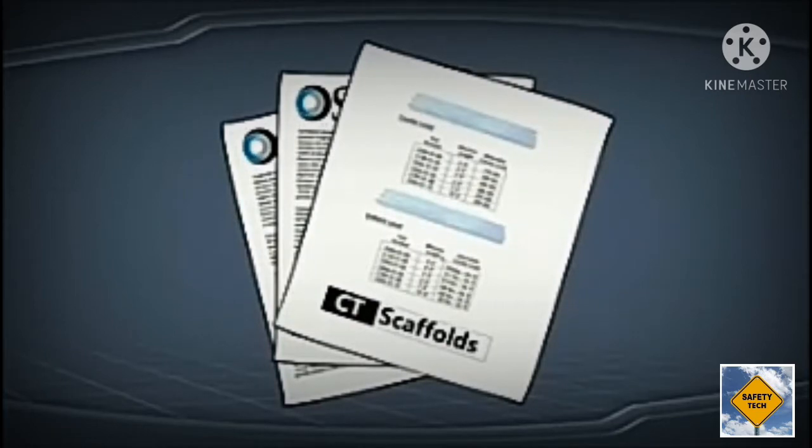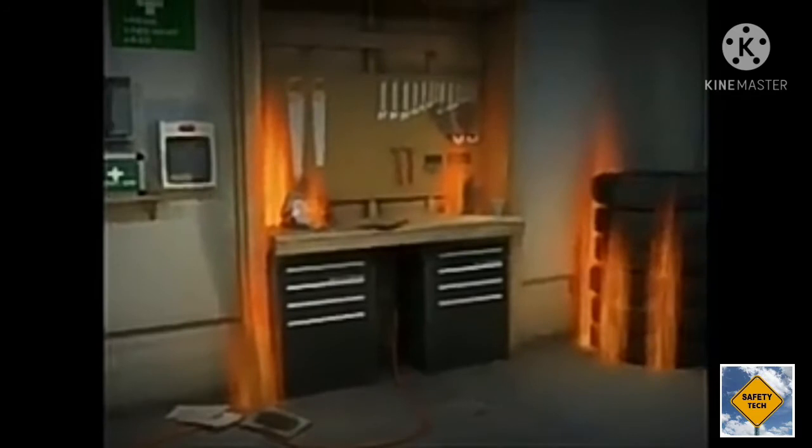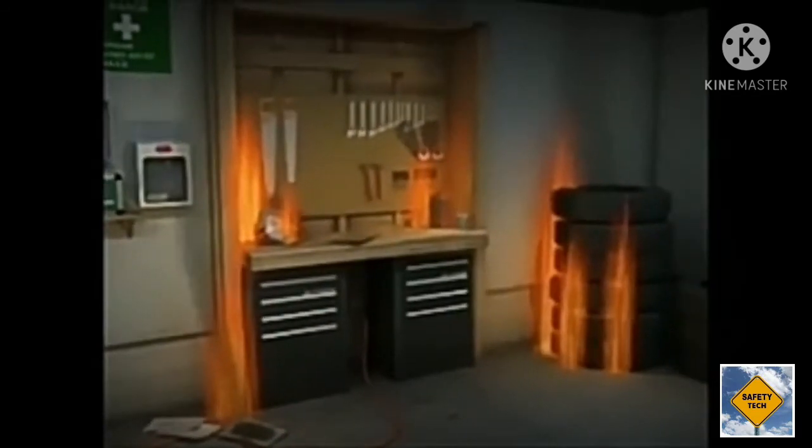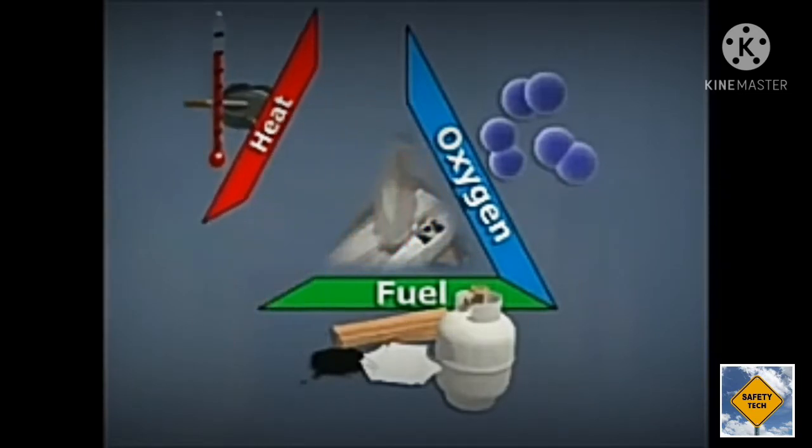Fires are one of the most hazardous emergencies you may face at work. Knowing what a fire is can help you prevent them from occurring and fight them when they do break out. The fire triangle is a model that shows the elements that must be present for fire to exist. The elements are heat, fuel, and oxygen. A fire needs all three to burn. Take away any of these three factors and the fire cannot continue.